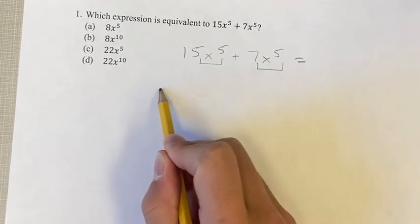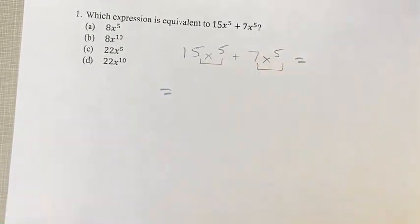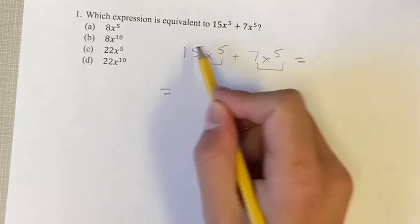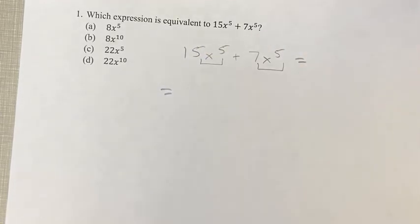And so what you can do, if you're adding two things that have the same variables, is you can add the numbers that are in front of them. You can add the coefficients, and then you can just keep the variable the same.